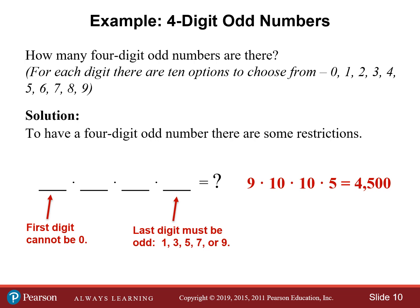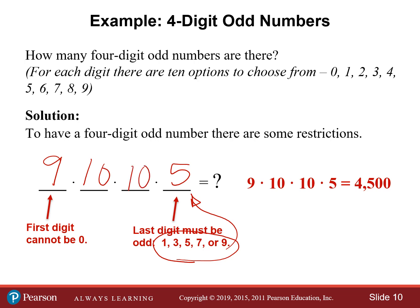The nine comes from the fact that we have nine different digits to choose from for the first digit — we cannot use zero. The five at the very end comes from the fact that we have to use one of the five odd digits at the end. For the two middle digits, there are no restrictions at all — we can use any one of the 10 digits there, which is why it's times 10 times 10 in the middle. The only restrictions were on the first digit and the last digit.